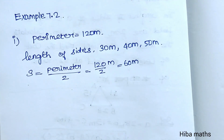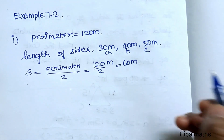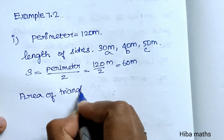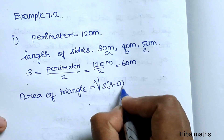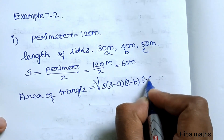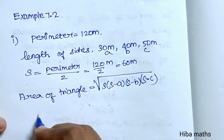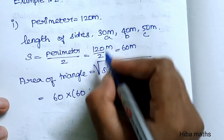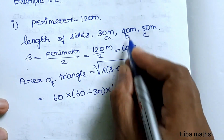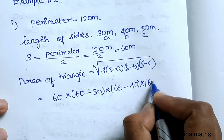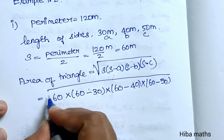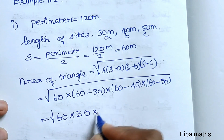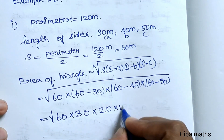S equals 60. The side lengths are: A, B, and C. Now we write Heron's formula: Area of triangle equals square root of S into (S minus A) into (S minus B) into (S minus C). Substituting S equals 60: root of 60 into (60 minus 30) into (60 minus 40) into (60 minus 50), which gives root of 60 into 30 into 20 into 10.